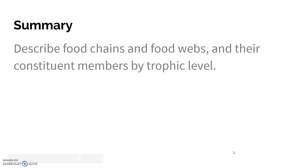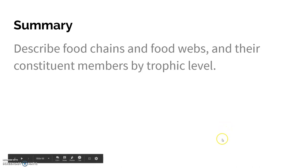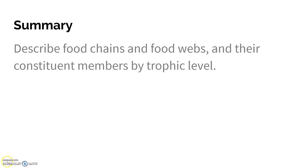As a summary for the last time: describe food chains and food webs and their constituent members by trophic level, adding in how they are affected by changes in that food chain. And then we're done with the first unit — that wasn't too bad. If you have any feedback, please let me know so we can make Unit 2 even better.